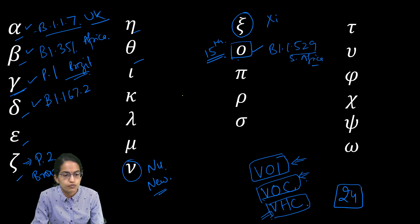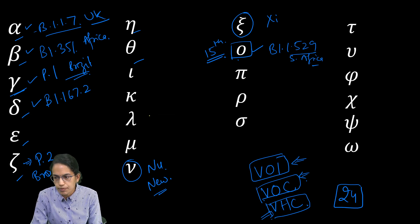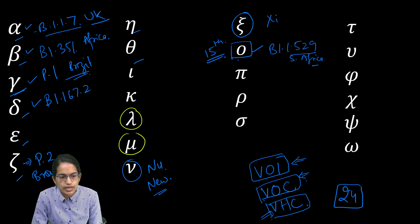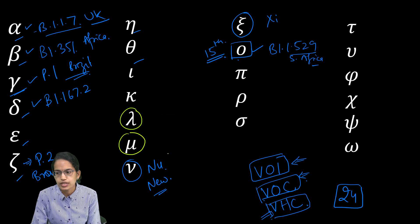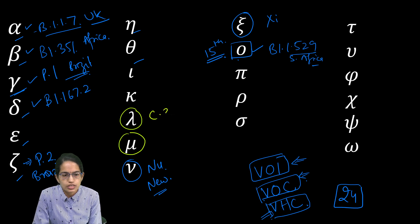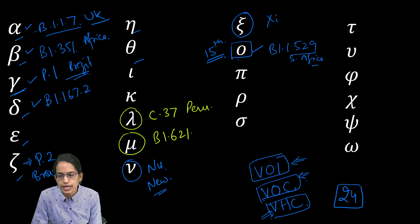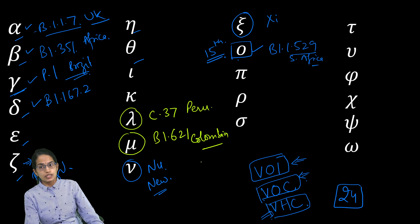Coming on to the next list is variants of interest. There are two variants of interest which is the lambda variant and the mu variant. These two are considered as the recent variants of interest. Lambda variant with a variation of C37 from Peru and mu variant which has the lineage of B1.621 from Colombia has been considered as variants of interest.